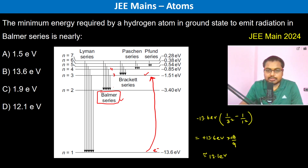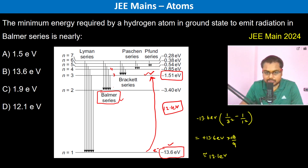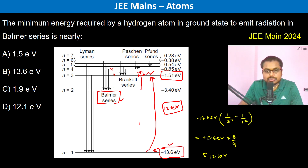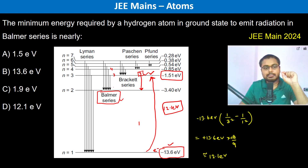We can verify: the energy at the third level is −1.51 eV and at the ground state it is −13.6 eV, so the difference is 12.1 eV. Once it is excited with 12.1 eV, the electron reaches the third orbit, and then falls from the third to the second, emitting radiation of the Balmer spectrum.